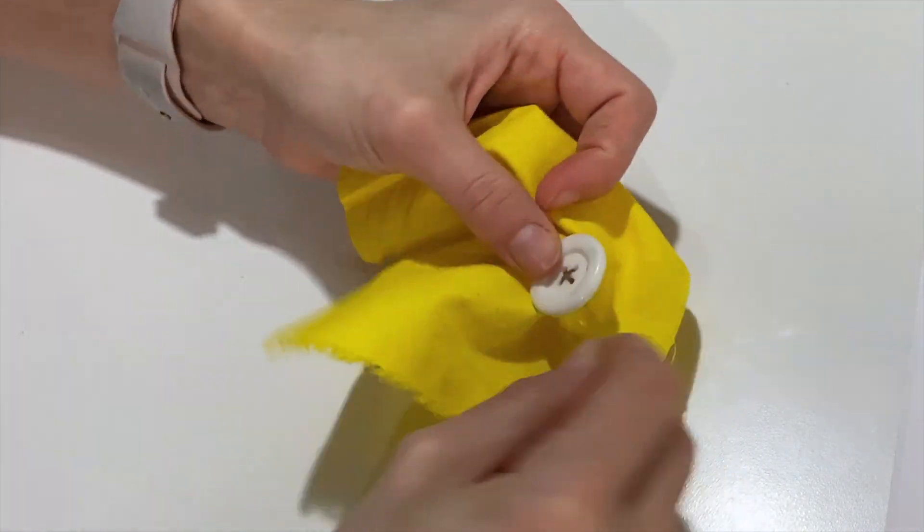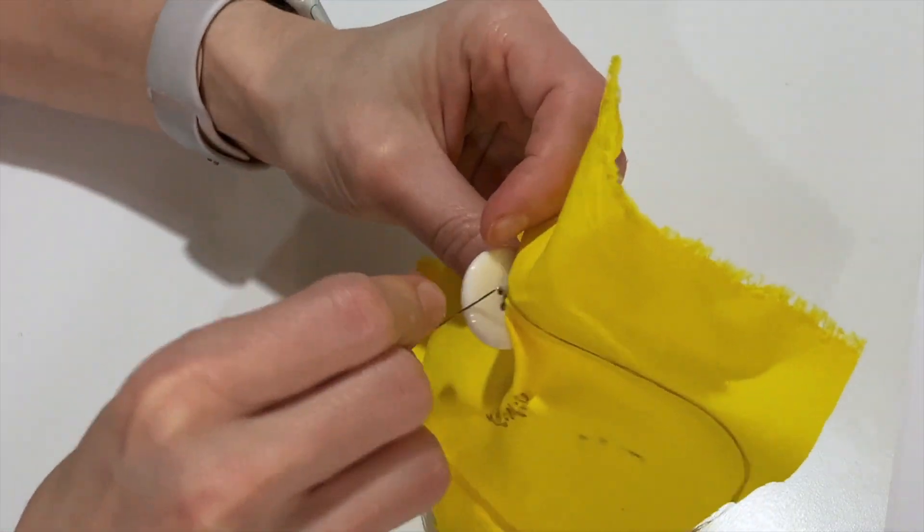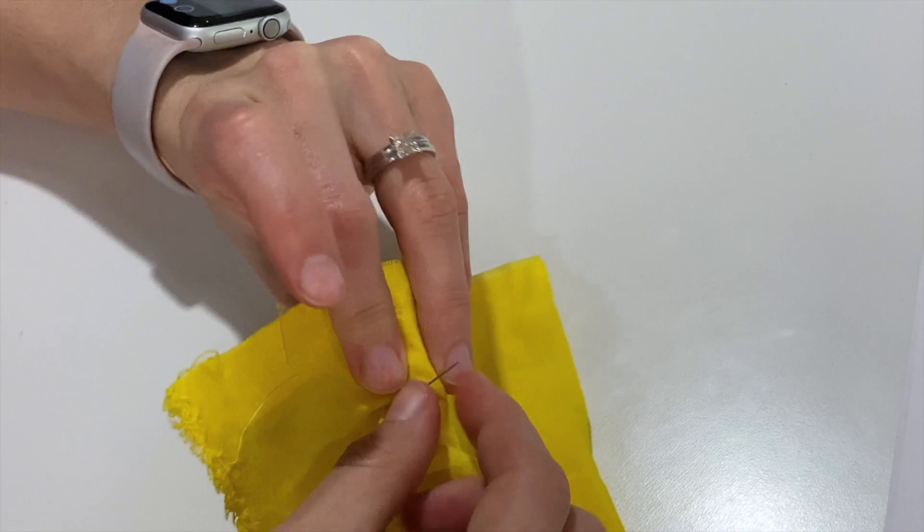After your fourth wrap around, insert the needle back into the material and come out through the back. This shank makes it easier for you to put the button through the hole in your clothing.